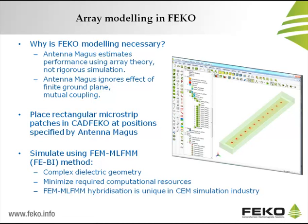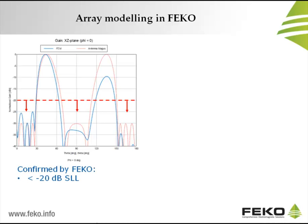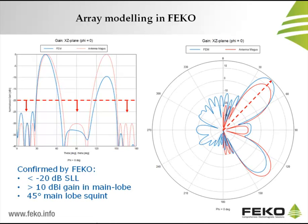Since Antenna Magus was used to design a planar antenna, we begin our investigation in FEKO by simulating this same planar antenna and comparing whether the FEKO output agrees with the Antenna Magus prediction of performance. We start by testing whether the required side-lobe level has been met. A normalized Cartesian plot comparing results from the FEKO model in blue to the Antenna Magus prediction in red shows good agreement between the two models and confirms that the antenna meets the required side-lobe restriction. A polar plot comparing directivity of the FEKO model to the Antenna Magus model once again shows good agreement and confirms that both models predict a 45 degree squint angle.